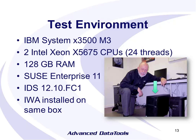The benchmarks we're about to show are running on a very modest system: an IBM System X 3500 M3 with just two processors that can run up to 24 threads. There's 128 gig of RAM, we're running Linux, and we're running IDS 12. In this configuration, we've got the database running on the same machine as the accelerator.